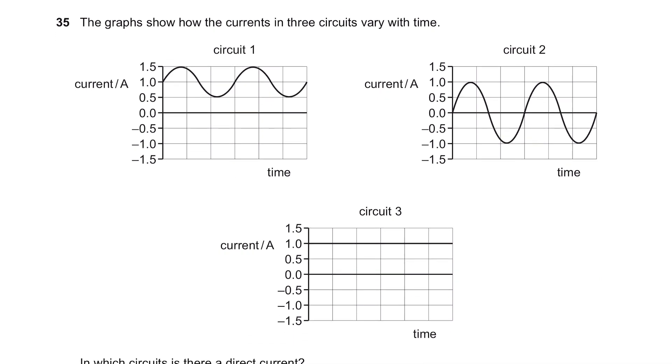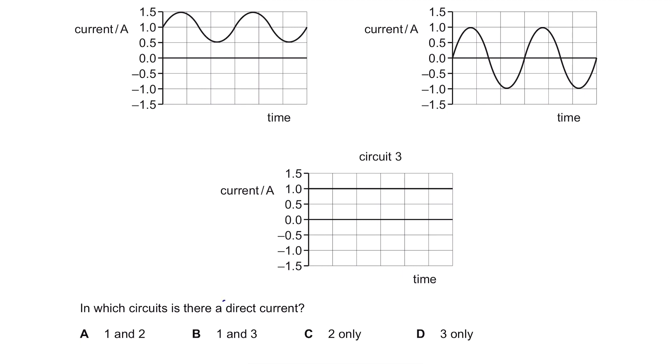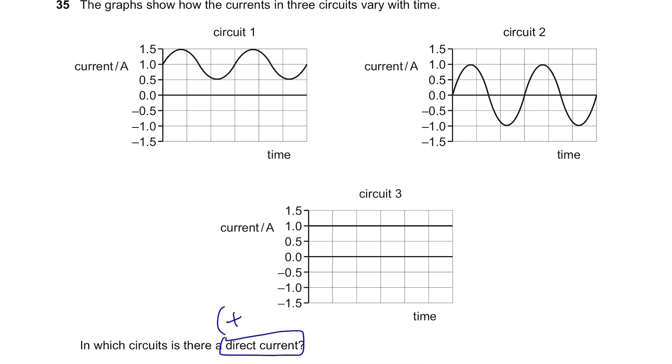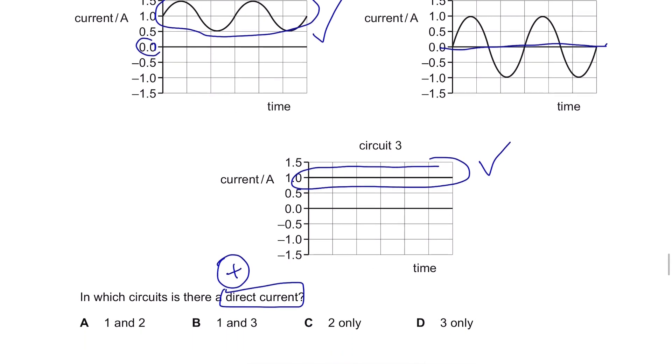Question 35. The graphs show how the currents in three circuits vary with time. In which circuit is there a direct current? A direct current is something that has positive value for its current. So, the shape doesn't really matter. For circuit 1, yeah, the graph stays above the 0.0 line. So, it is a DC circuit. But for circuit 2, it has went past the 0.0 line. There are negative values. So, this is an AC circuit. So, nope. And circuit 3, it's very constant. Just positive 1.0. So, it's also a DC circuit. The answer is B.